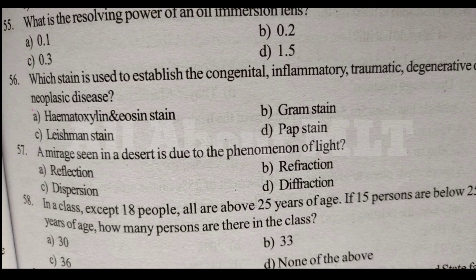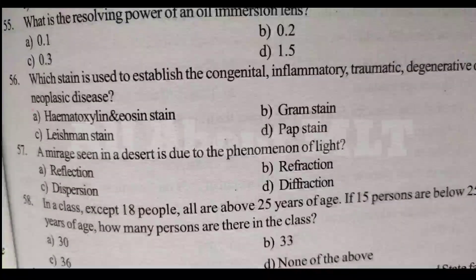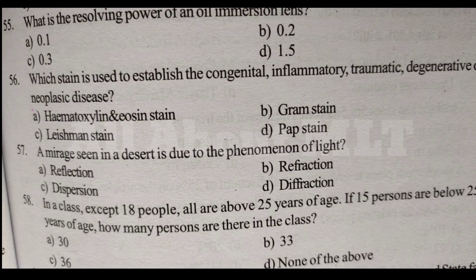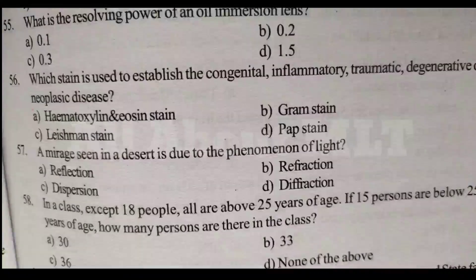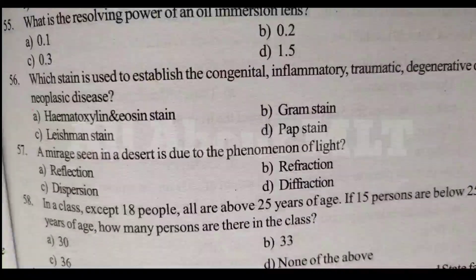Which stain is used to establish the congenital, inflammatory, traumatic, degenerative or neoplastic disease? Option A hematoxylin and eosin stain, Option B gram stain, Option C Leishman stain, Option D pap stain. Answer is Option A hematoxylin and eosin stain.